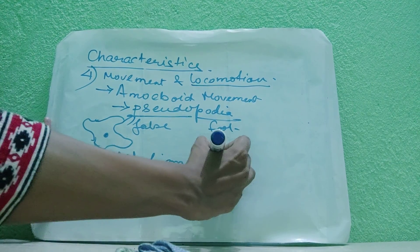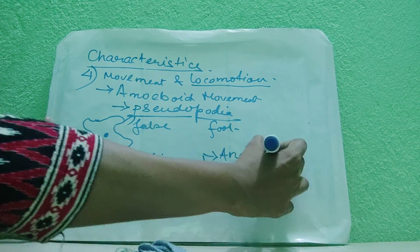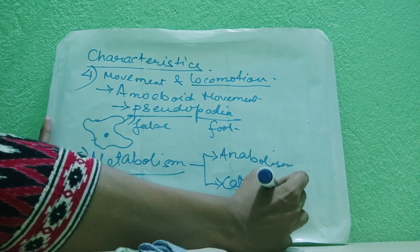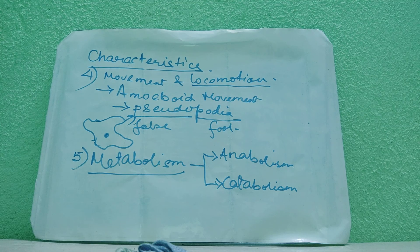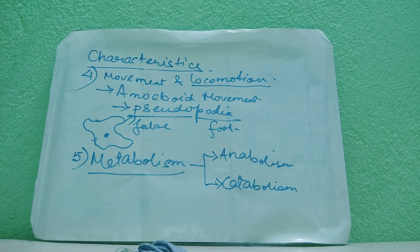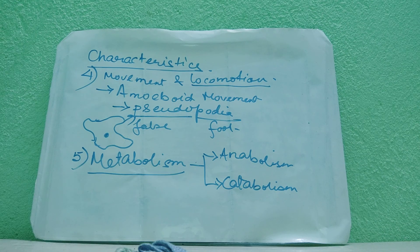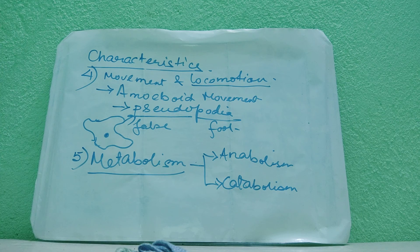Metabolism has two parts: anabolism and catabolism. Anabolism means the constructive process — like ingestion, taking in food, which is anabolic in nature. Catabolism will be like excretion, which is a catabolic function — catabolism means the destructive process. Anabolism means the constructive process, the one helping in building of the protoplasm. Catabolism means wasting or spending energy, like respiration. These are the two parts of metabolism which continuously maintain it.